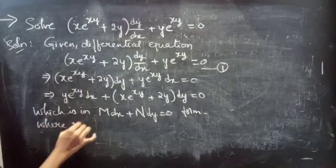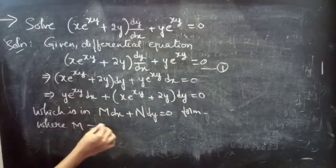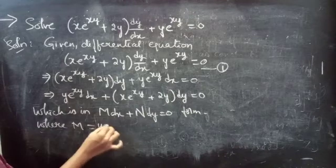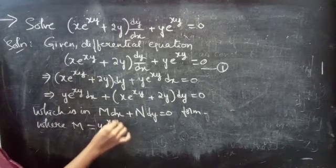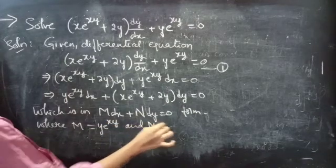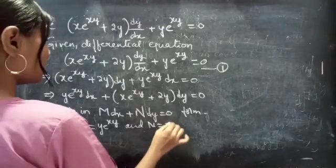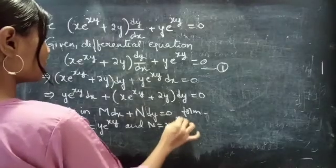Where M equals y·e^(xy), and N equals x·e^(xy) + 2y.